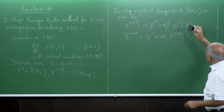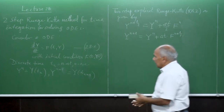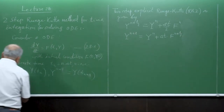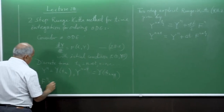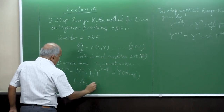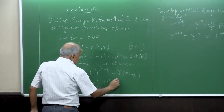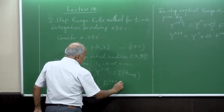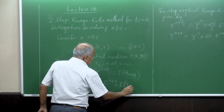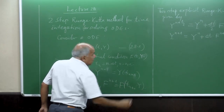In our notation, F_n = F(t_n, y_n) and F_{n+1} = F(t_{n+1}, y_{n+1}). So this is a two-step method: step one and step two.